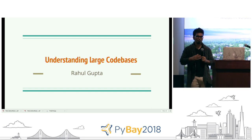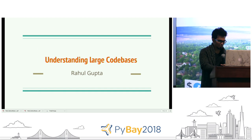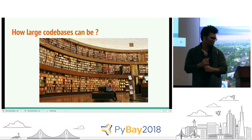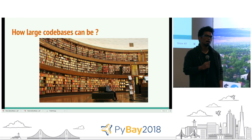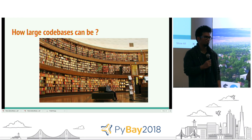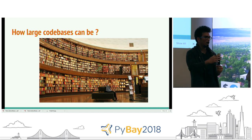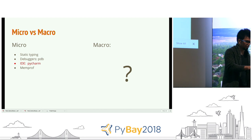How many of you have dealt with large code bases? That's like everybody. So how large are we talking? There was an article published in Wired a couple of years ago that Google's search engine code base is about two billion lines of code. If you have files containing 500 lines, that's two million files — and that's a lot. When you're working on large code bases, it's hard to wrap your head around how each component is linked to the others.